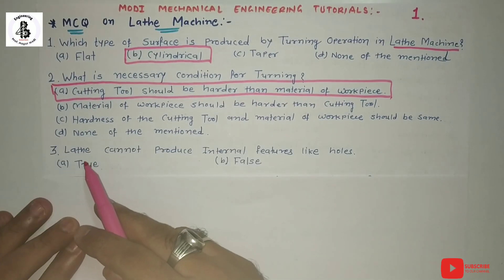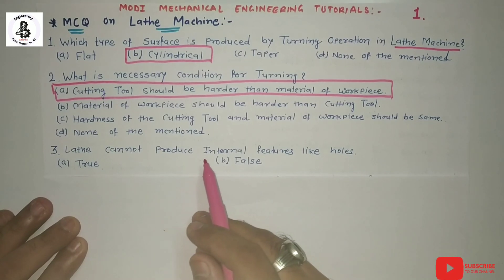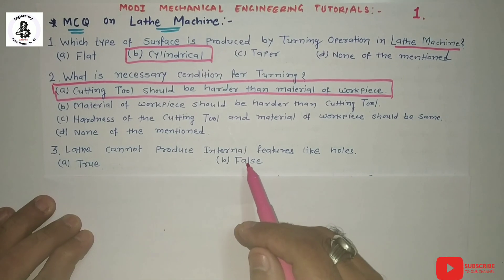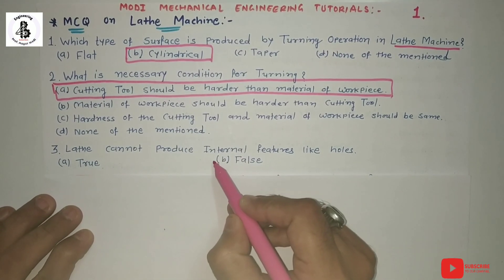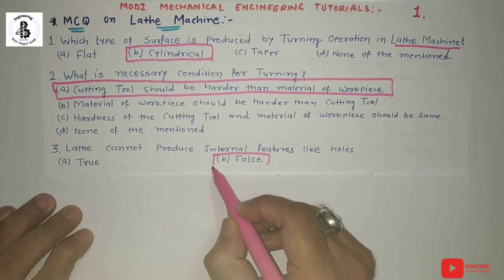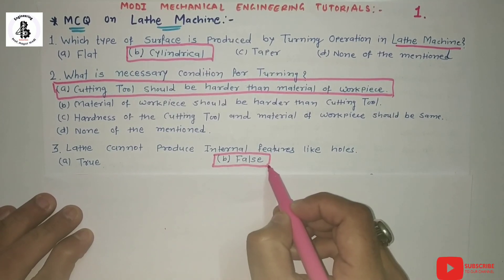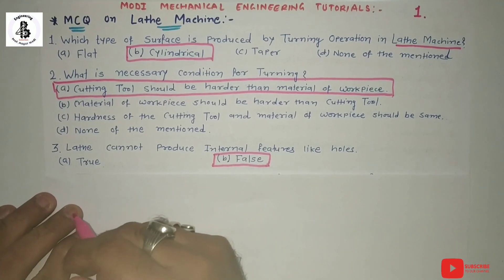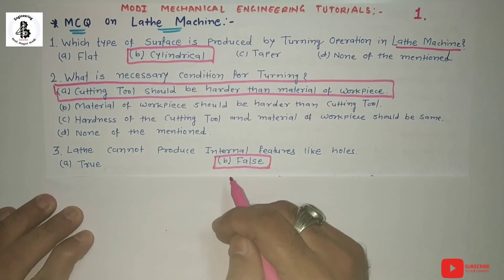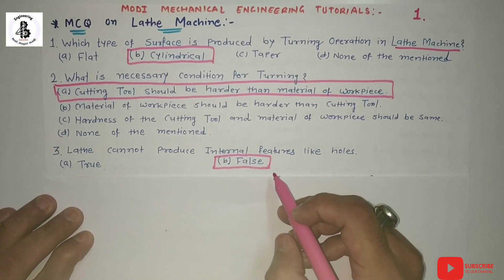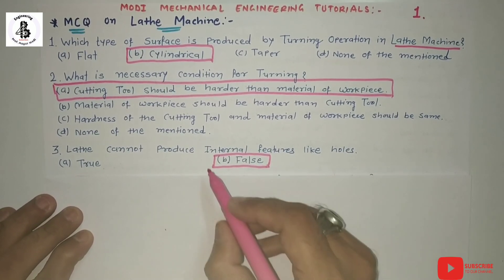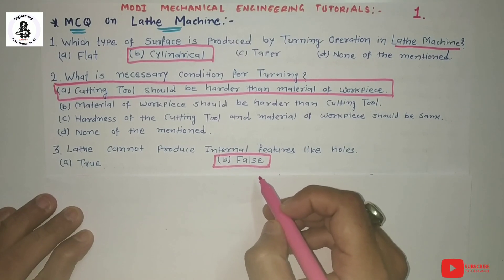The next question: lathe cannot produce internal features like holes — true or false? Basically that is false. With the help of a lathe machine you can also produce holes. For drilling operations on the lathe machine, you can find the link in my description for the different kinds of operations carried out on lathe machines. So drilling is also possible on a lathe machine, and this statement is false.